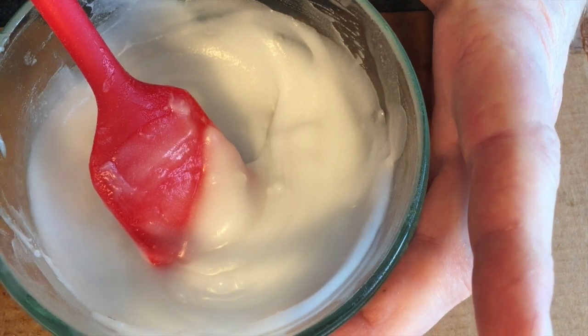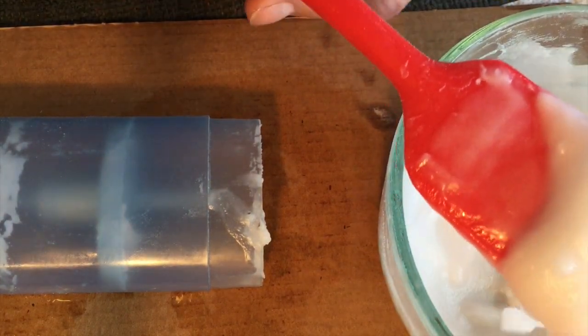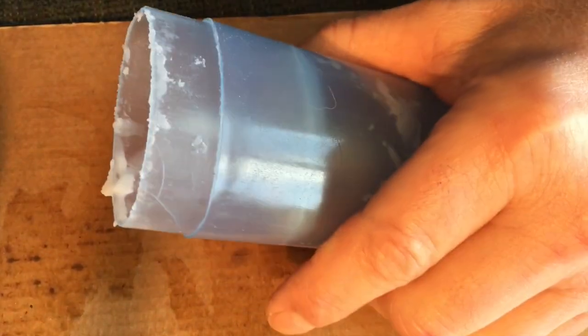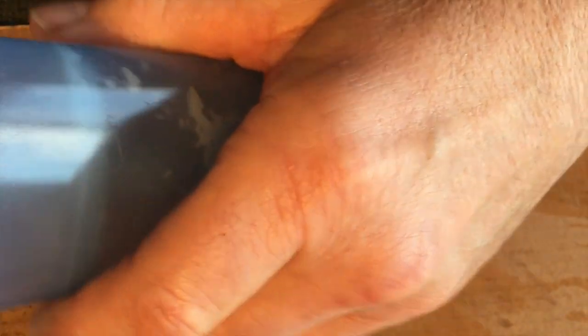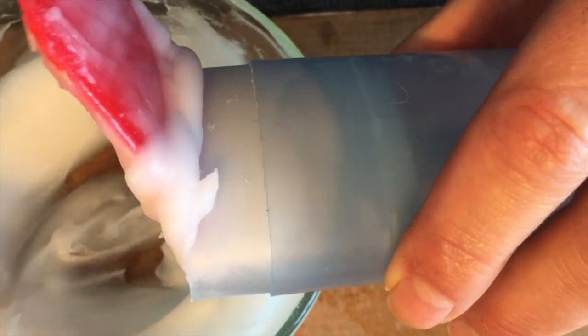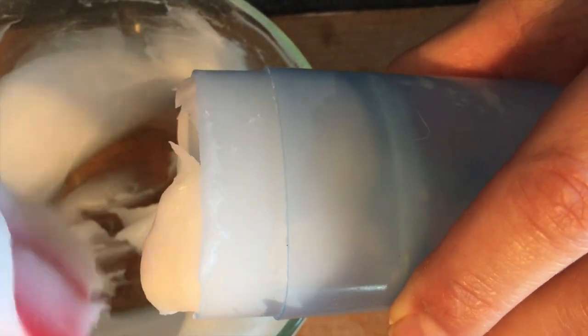So now we're ready to put it in the container. Let's get a container over here. Get a little scoop of our stuff. Let's switch sides because I am right-handed. This is a little messy. Let's get you in the camera. There you go. Just like that. I pack it down in there.